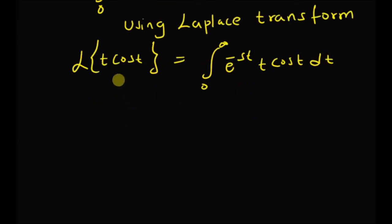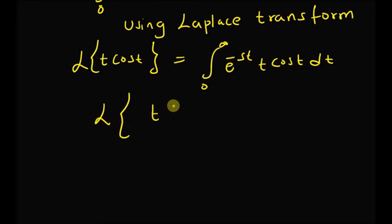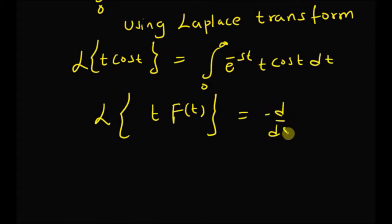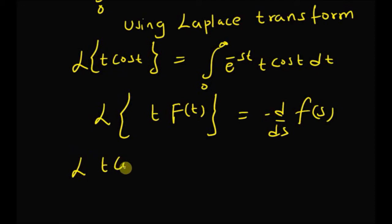To find the Laplace transform of t · cos(t), we use the following property: the Laplace transform of t · f(t) is equal to minus d/ds of F(s), where F(s) is the Laplace transform of f(t). Using this property, we can write the Laplace transform of t · cos(t) as minus the derivative of the Laplace transform of cos(t).